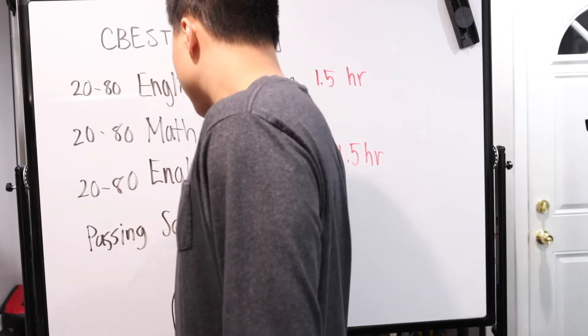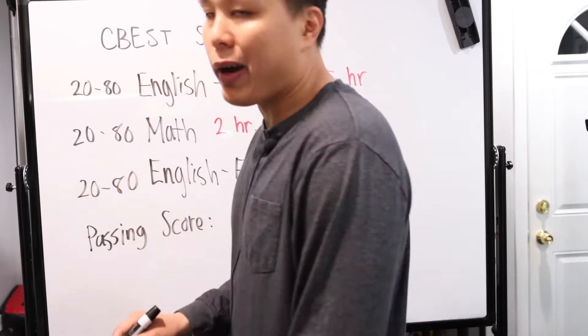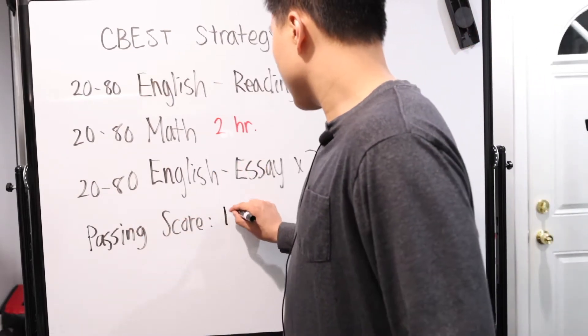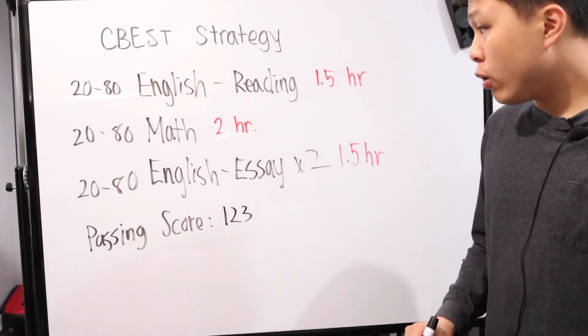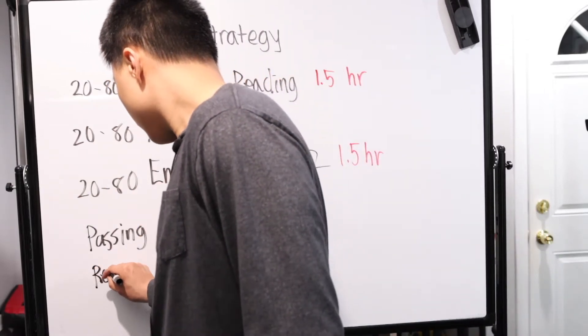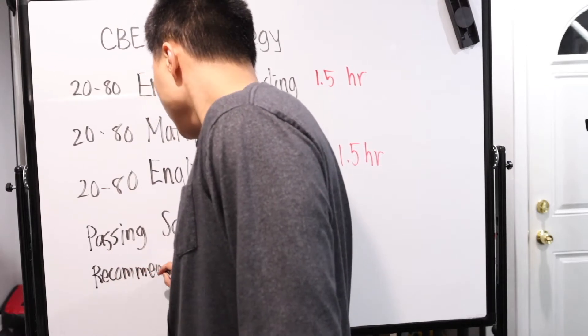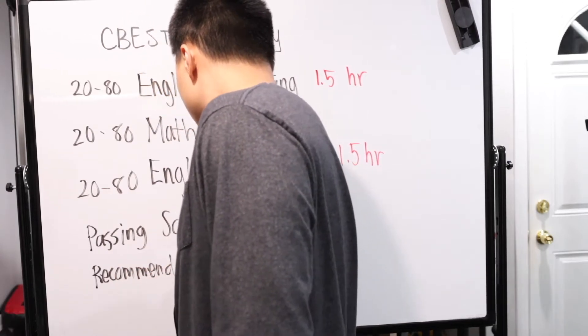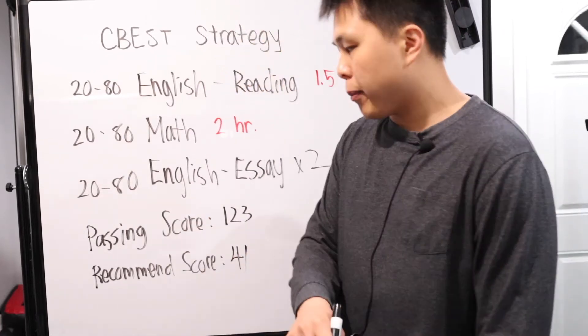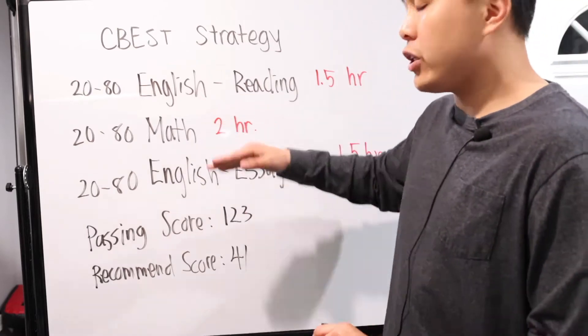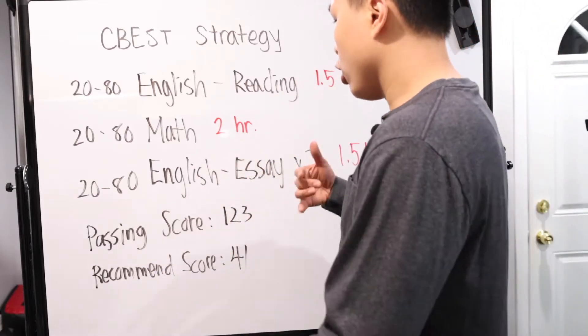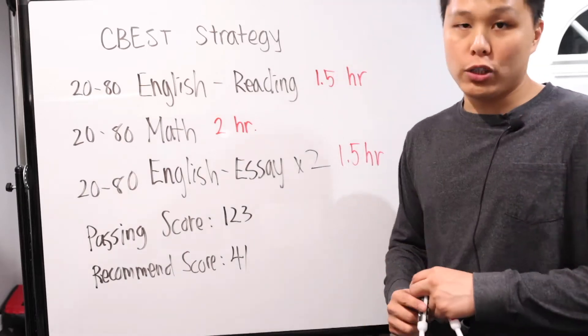They give you the passing score. So it's sort of a pass fail, but you do have a score. Luckily, it doesn't matter how high you pass, how low you pass, if you pass, you pass. The passing score is 123. So of course you can do the math yourself or read their website and the recommended score for each section is 123 divided by three is 41. So that's what they recommend - at least get a 41 in each section and then you will pass.